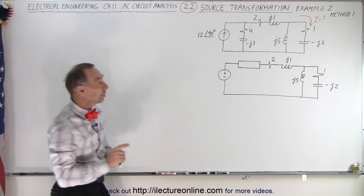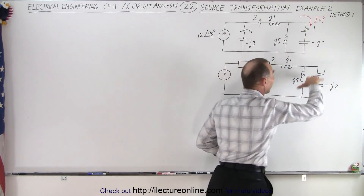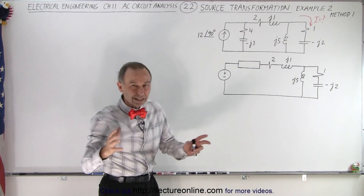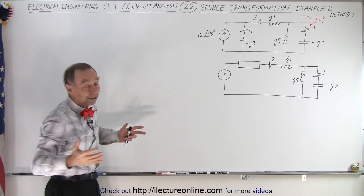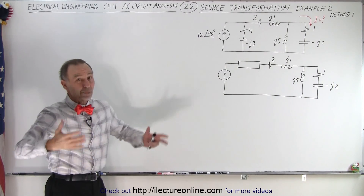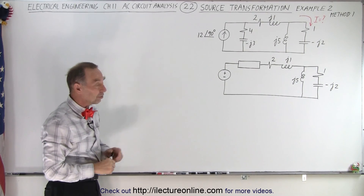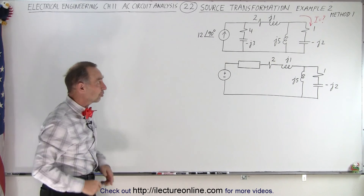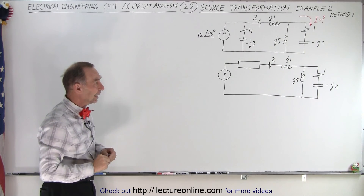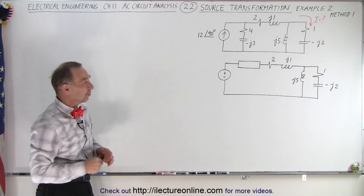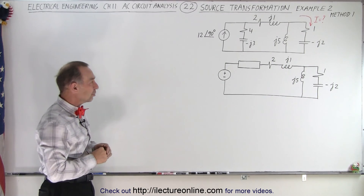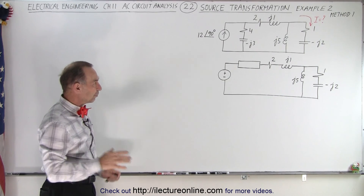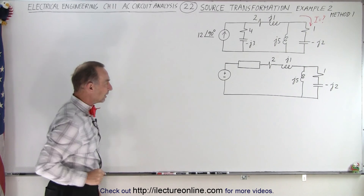Also notice I put down method one because I'm going to solve this problem in slightly two different ways to show you that there's many ways in which you can approach a problem like this. There's not just a single approach to using source transformation, and you can see that there's different things you can do at any point in time to solve the circuit. But first let's do it like this.